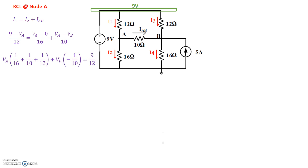Rearranging the expressions, we collect VA terms: 1/16 from I2, 1/10 from IAB, and 1/12 brought to this side. VB has only one term: negative 1/10. And the constant on the right-hand side is 9 over 12.